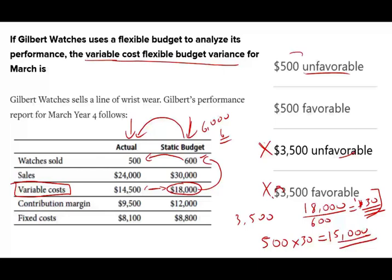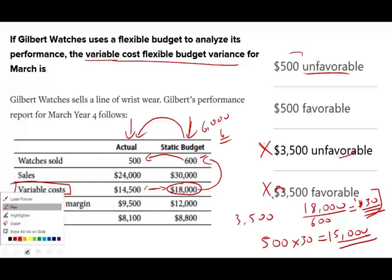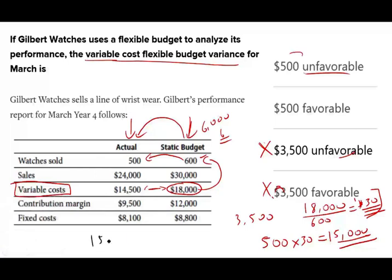Now I see the real difference. The flexible budget says variable cost should be $15,000 for 500 units, but actual variable cost was $14,500. The difference is $500. I sold 500 watches, my variable cost should have been $15,000, but it was only $14,500 — that's great. This could happen because the manufacturer bought supplies at a lower rate, reducing variable cost. They saved $500, so the variance is $500 favorable. That's how we arrive at the answer for this question.